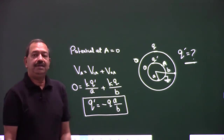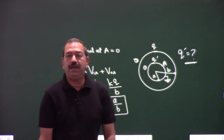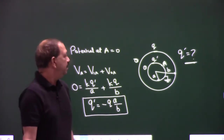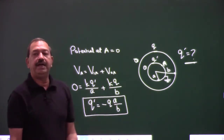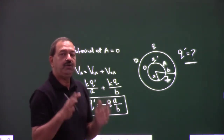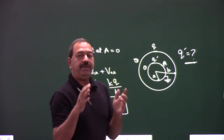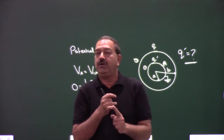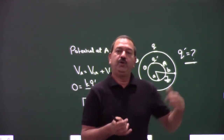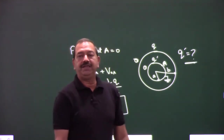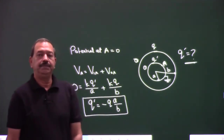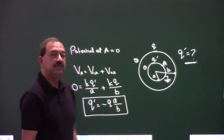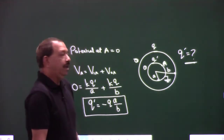So q dash is equal to minus qa/b. That is how we calculate induced charge. In this question we learn two things: how to calculate potential inside a shell, and how to calculate the induced charge. Kyunki jab bhi hum charge induce karenge, usko ground karenge, aur jab humne ground kiya to potential 0 lelo, aur phir us potential ko calculate karke aapke paas induced charge aa jayega. Is it clear? Yes sir. Okay, ab aage padhte hain.